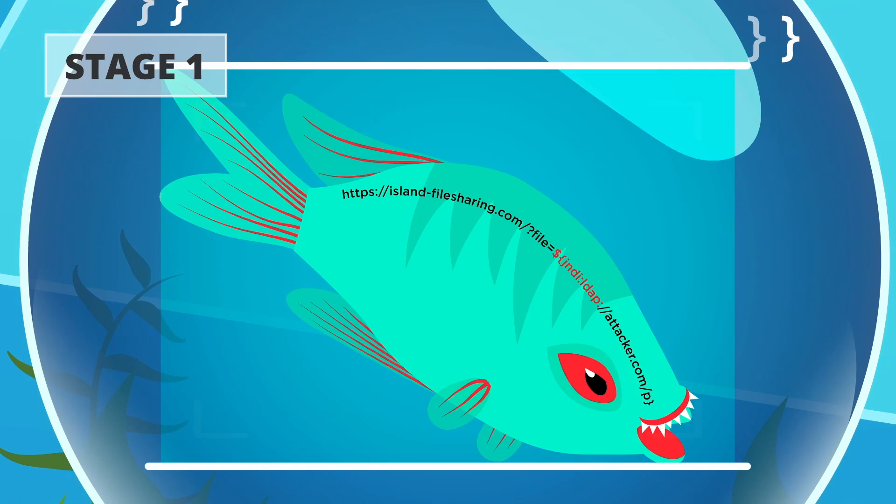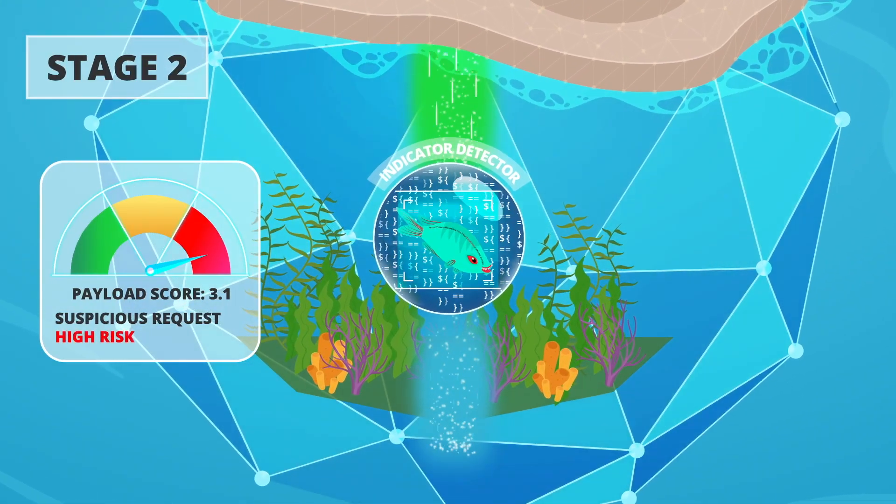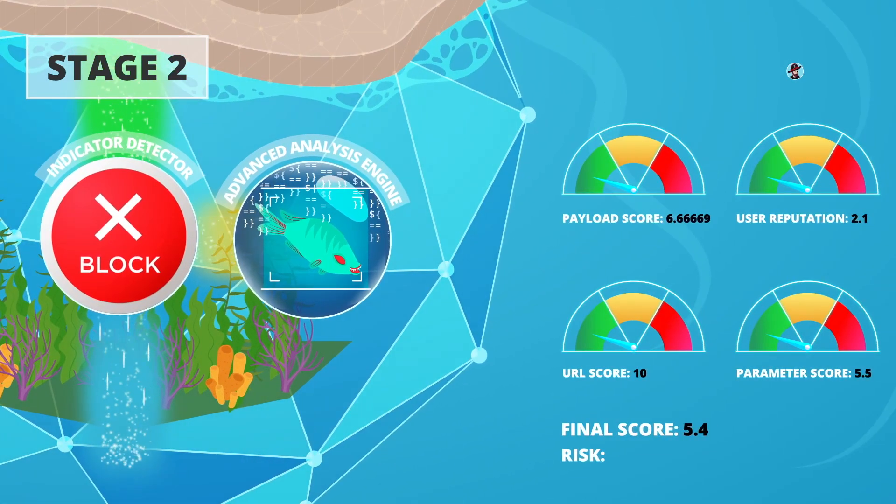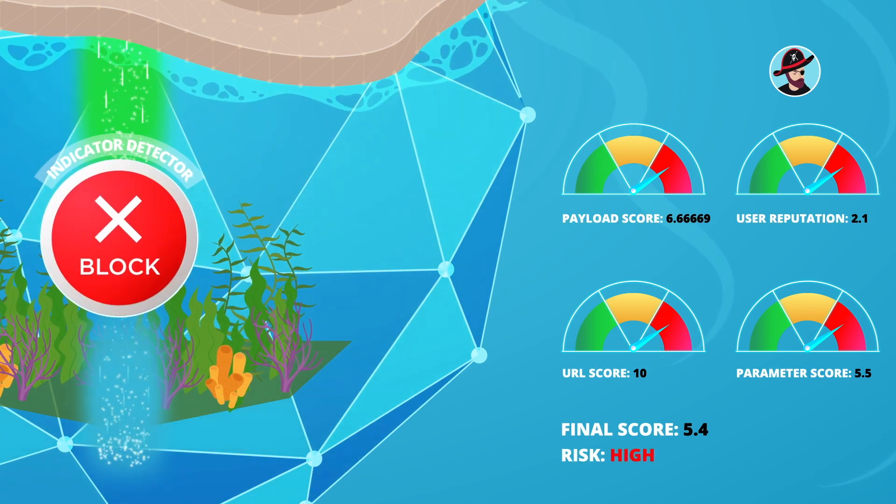Web requests that are categorized as suspicious are passed to Stage 2, which makes a final determination whether they should be blocked. This is done based on multiple weighted scores and so also minimizes false positives.